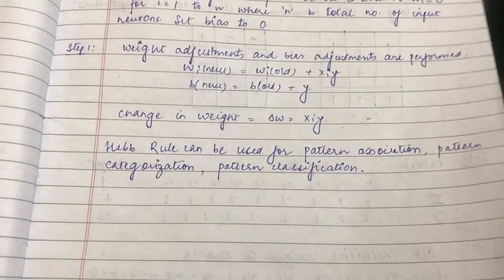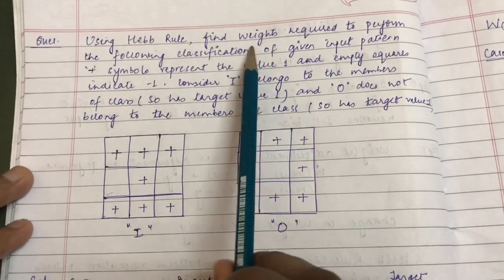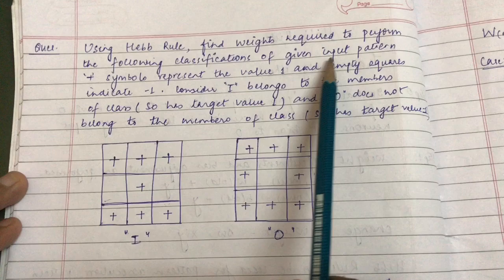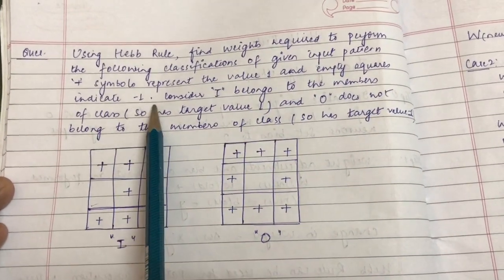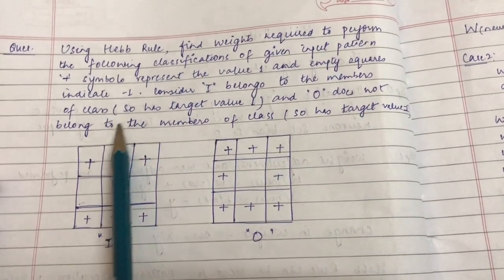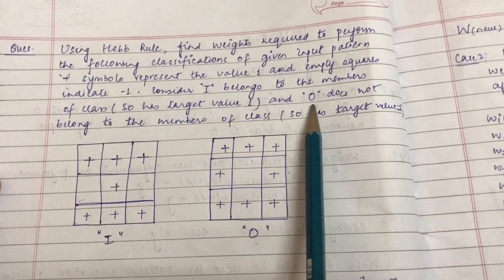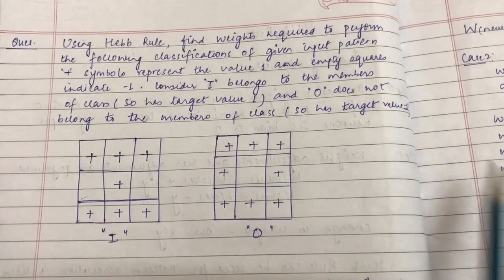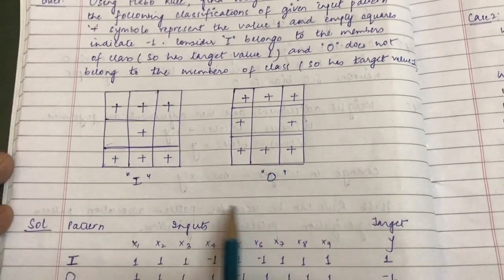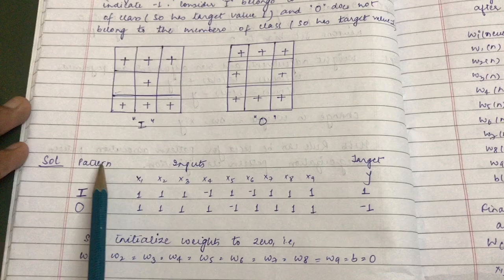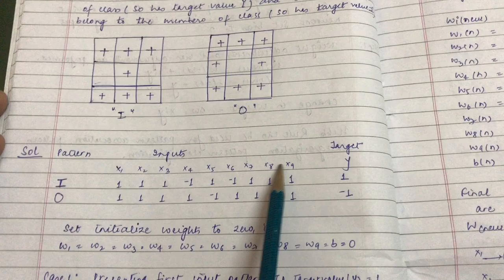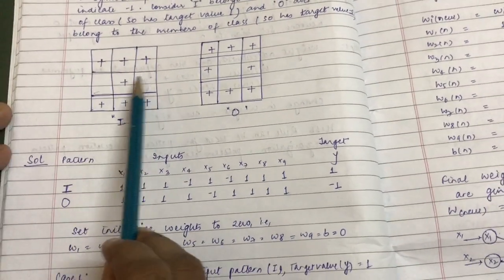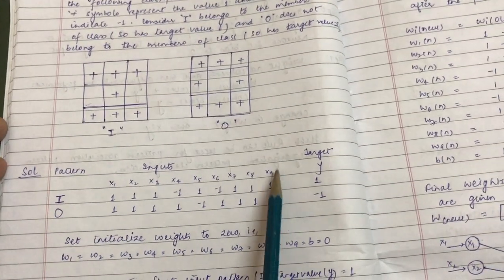Now let us look at the problem for pattern classification using Hebb rule. The question is: using Hebb rule, find the weights required to perform the classification of given input patterns. Plus symbols represent the value 1 and empty squares indicate minus 1. Pattern I belongs to the class so it has target value 1, and pattern O does not belong to the class so it has target value minus 1. We will have 9 input vectors: x1, x2, x3, x4, x5, x6, x7, x8, x9.